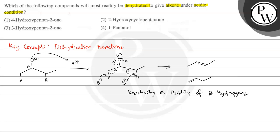Now let us look at the four compounds given. The first is 4-hydroxypentane-2-one: pentane-2-one has a C=O group, and there is an OH group at the fourth position. The second compound is 2-hydroxycyclopentanone: a five-membered ring with a C=O group and an OH group.